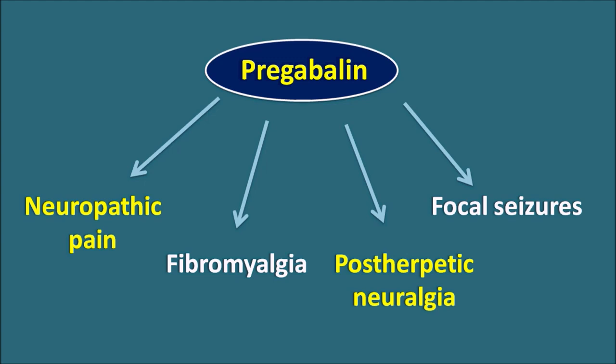Whatever the clinical use, pregabalin acts in all these clinical settings by inhibition of neuronal activity. Pregabalin is a drug which reduces neuronal transmission, thereby decreasing nociception — that is pain signaling — as well as decreasing excessive neuronal activity, thereby showing anticonvulsant action.